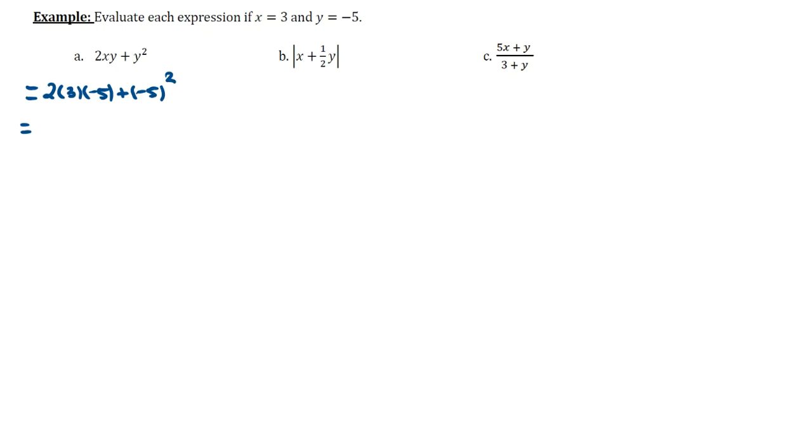First thing you want to do is square the negative 5. Keeping in mind PEMDAS, please excuse my dear Aunt Sally, or as I like to say, please end my day at school craft. There's no operations going on inside parentheses, so you would move on to evaluating any exponents. Hence why we're doing negative 5 squared first. So I'll keep this as 2 times 3 times negative 5. Negative 5 squared is 25.